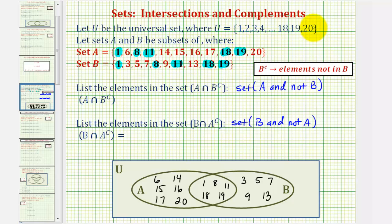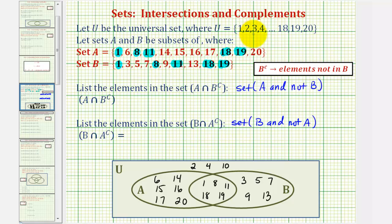Notice how the universal set contains the elements one through twenty. So now we'll determine the elements that are in the universal set but not in A or B. Notice that two is not in A or B, so two would be in the universal set. Four is not in A or B, so four would be in the universal set. Ten is not in A or B, so ten is in the universal set. Twelve is also not in A or B, so twelve would be here. So here's the Venn diagram to represent our universal set and sets A and B.